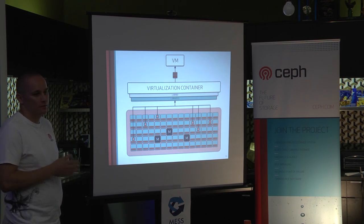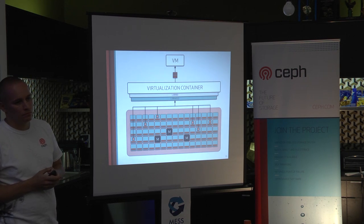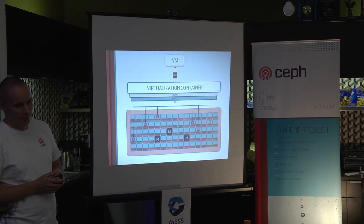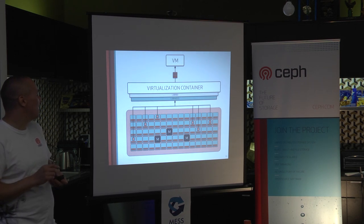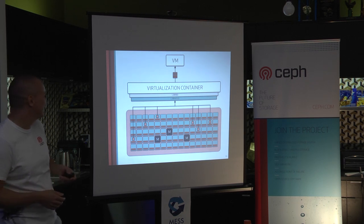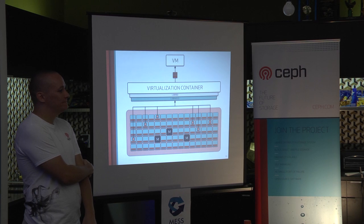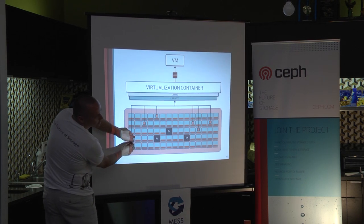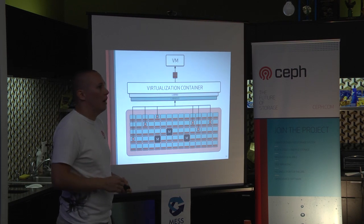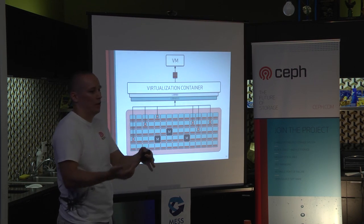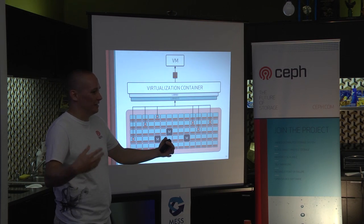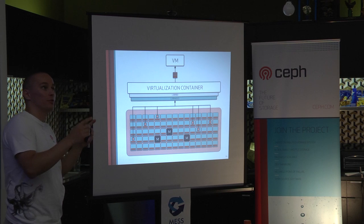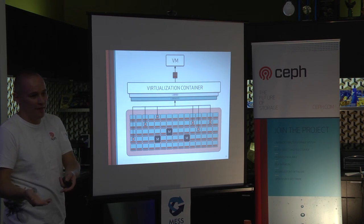Ceph is not currently doing deduplication. If you're building on top of the object store yourself, you can do content-addressable storage, and that is your dedup. We do the simple version where copy-on-write cloning means data is not copied until you write to that space — so there is duplicate avoidance but there is no true dedup. Within one filesystem you could do dedup, but you're only looking at a sliver of one server, so it's not really all that beneficial.